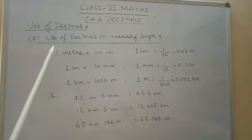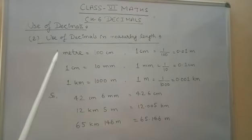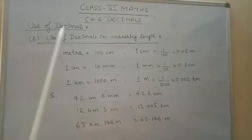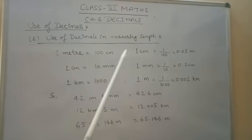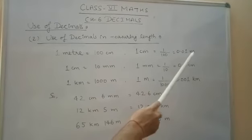Now student, the second use of decimals is use of decimals in measuring length. So we know that 1 meter is equal to 100 centimeter. The reverse of this is 1 centimeter is equal to 1 upon 100 meter, that is 0.01 meter.